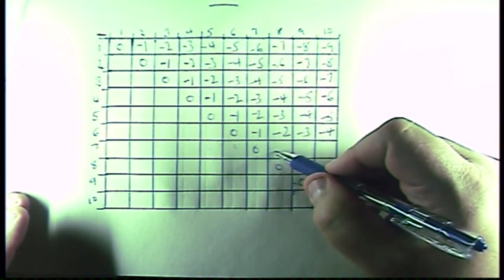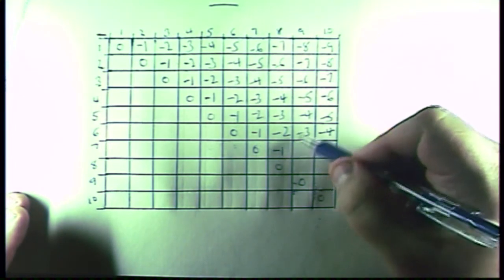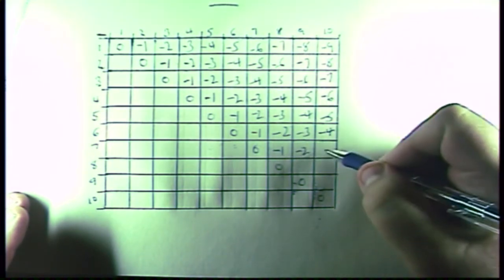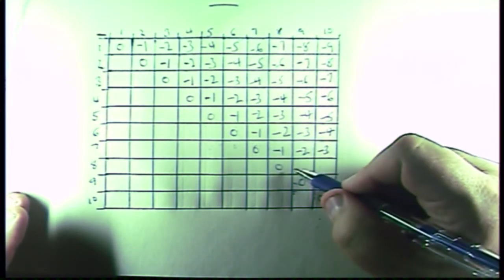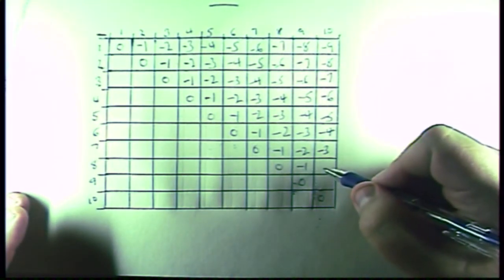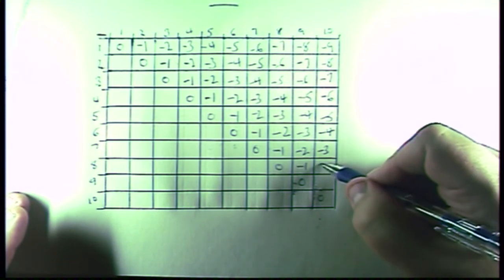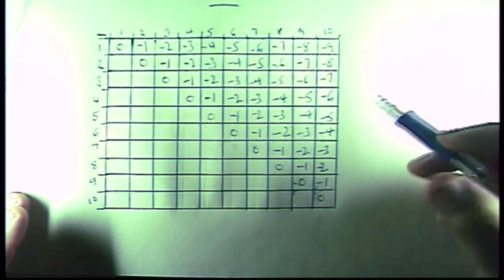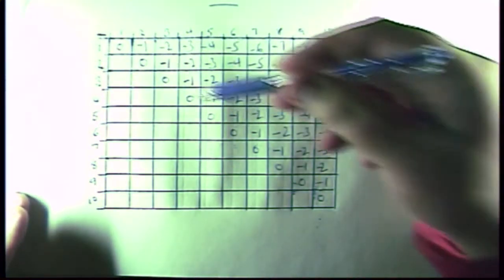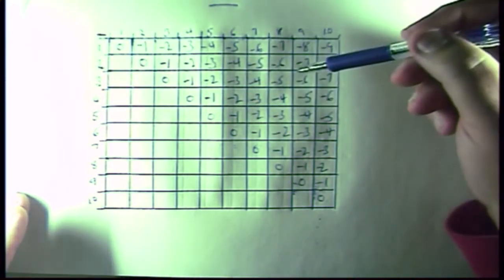And so that's what we've learned at this point. Now, 7 minus 8 is a minus 1, 7 minus 9 is a minus 2, and 7 minus 10 is a minus 3. And then 8 minus 9 is a minus 1, and 8 minus 10 is a minus 2, and then 9 minus 10 is a minus 1. So this takes care of this part of our subtraction grid.